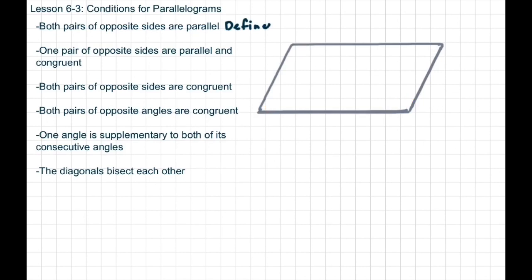The next one says one angle is supplementary to both of its consecutive angles. The word consecutive means next to, so not across from. And supplementary means it equals 180 degrees. So let's assume this angle here is 100 degrees. The angles next to it — this angle and this angle — have to be supplementary. This one doesn't count because it's across from, not next to. So this angle would have to be 80 degrees because 100 plus 80 is 180, and this one also would have to be 80 degrees.